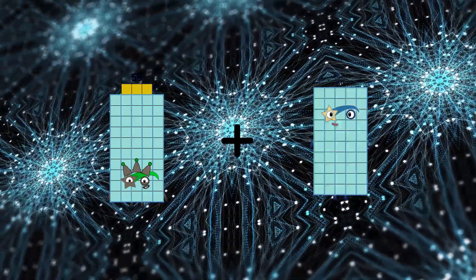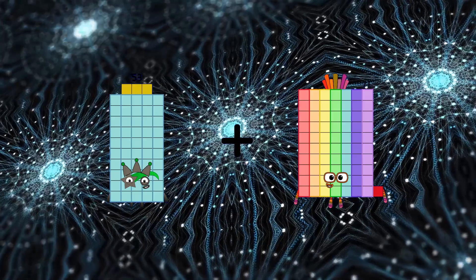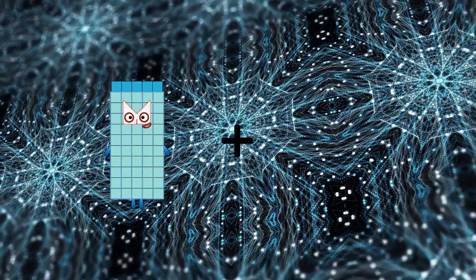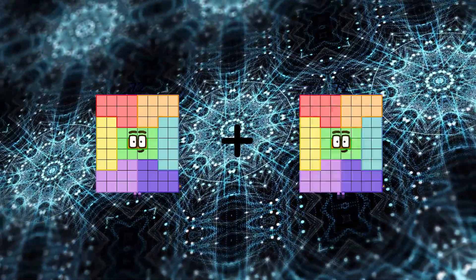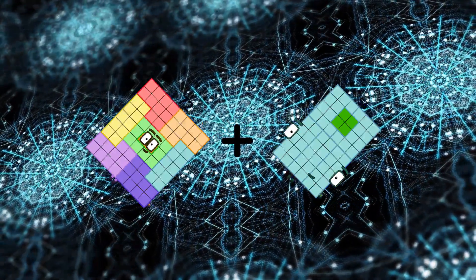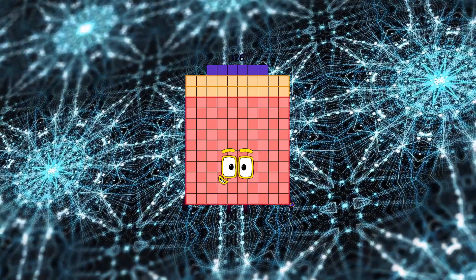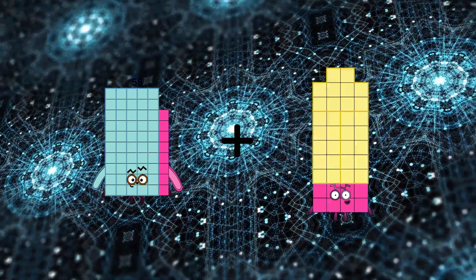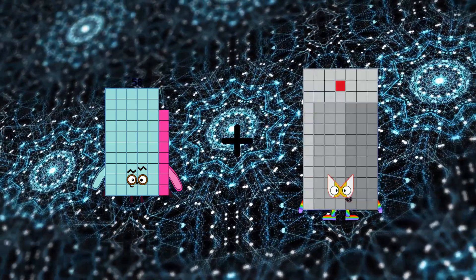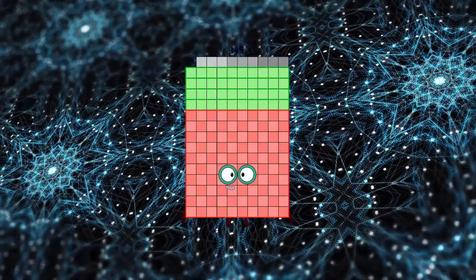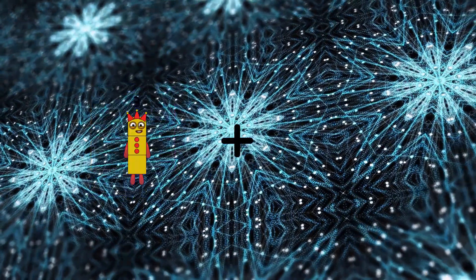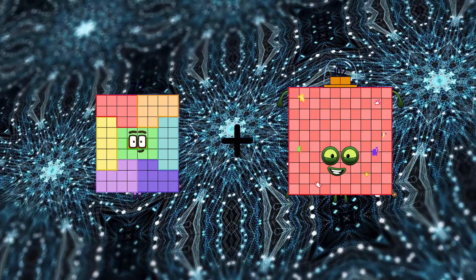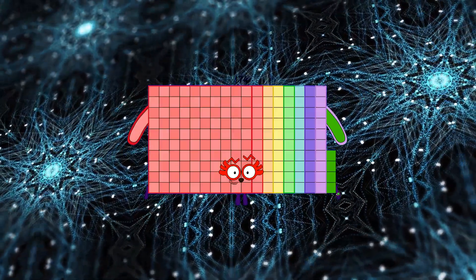53 plus 71 equals 124. 72, 52 plus 52 equals 126. 58 plus 91 equals 149. 72 plus 102, 72 equals 174.